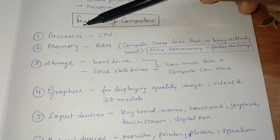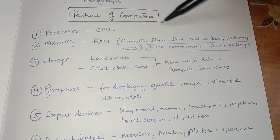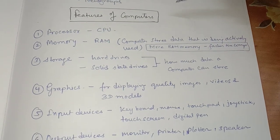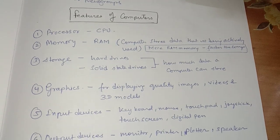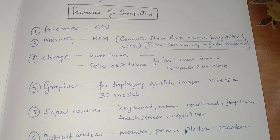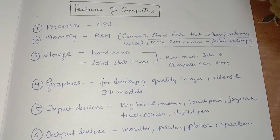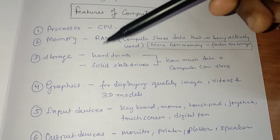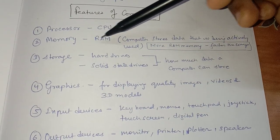The processor or CPU — when you are purchasing a computer, you must look for the CPU or the processing speed of the CPU.